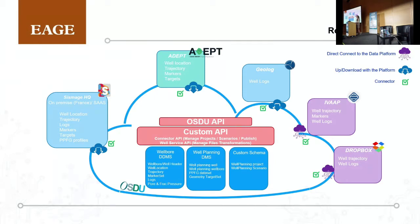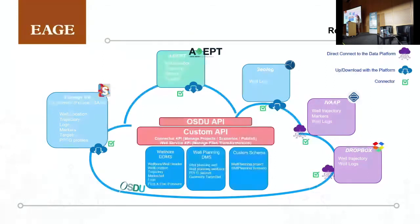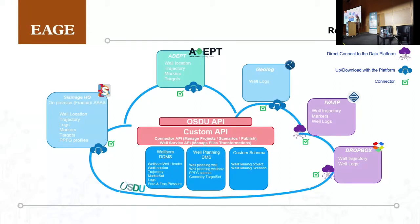For the Geolog connector, it allows consuming well logs from the data platform in LAS format, doing the interpretation, and sending the data back in LAS format along with PDF plots. For IVAP, we tested visualization of well trajectories, well markers, well logs, and sharing with third parties. The Dropbox allows ingesting well trajectory and well logs into the data platform. For all of this, we used the community APIs. The overall strategy of Total Energies is to be as standard as possible with the OSDU community code and the APIs proposed. We used the wellbore DMS, the well planning DMS for well design before drilling, and introduced custom schemas for the scenario to fit our business need — an advantage of the OSDU open code that allows customization when needed.